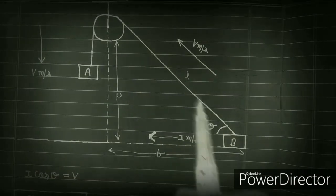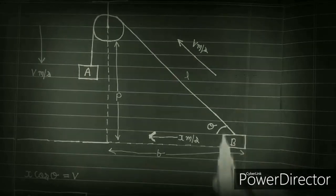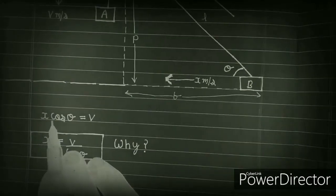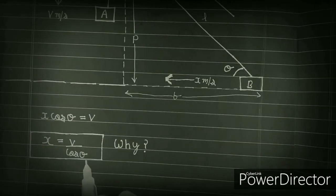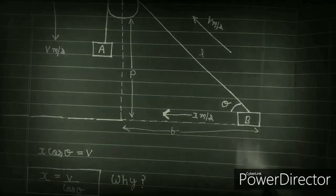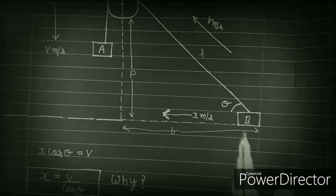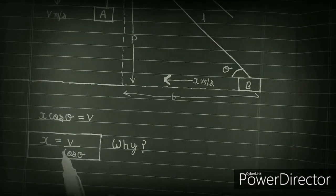Block B can go up to this point, because gravity will also act. Now, x meters per second — so here, x and v have the relation: x·cos θ = v, that is, x = v divided by cos θ. Now people ask: why did we take the x-component here? Why did we take v·cos θ = x?